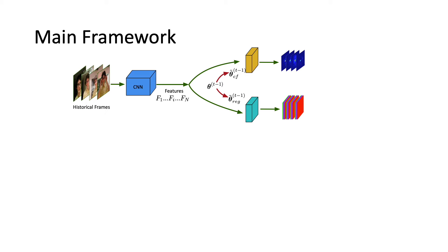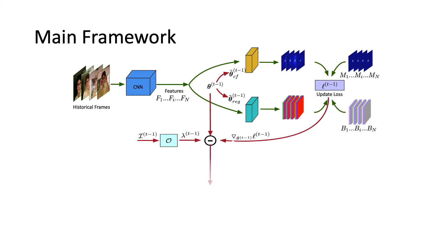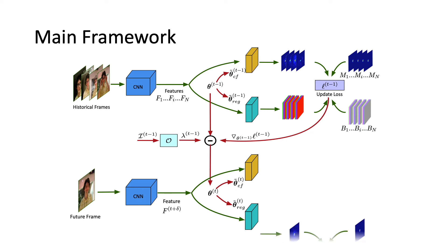Our key idea is based on the assumption that the best optimizer should be able to update the model to generalize well on future frames. We simulate this scenario in a meta-learning paradigm by recurrently optimizing the tracking model and then testing it on a future frame.